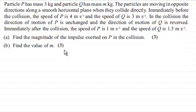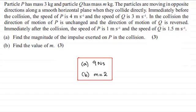If you'd like to have a go at this, I'll give you a moment to pause the video. Welcome back. I'll give you the numerical answers: part A, the impulse is 9 newton seconds, and for part B, the value of m is 2.